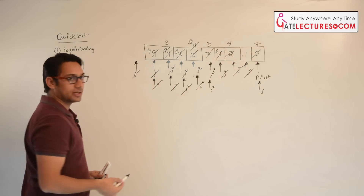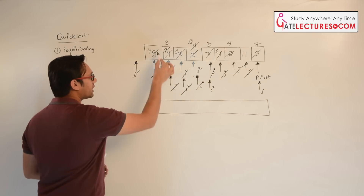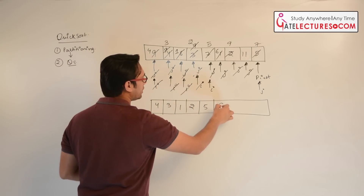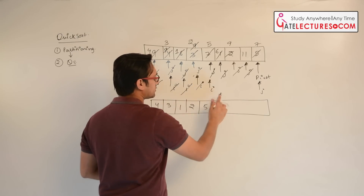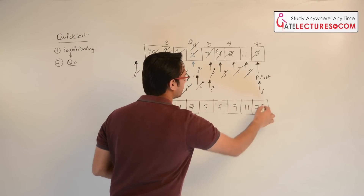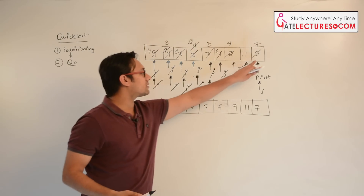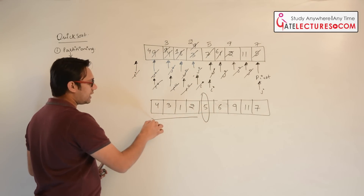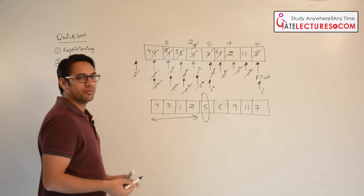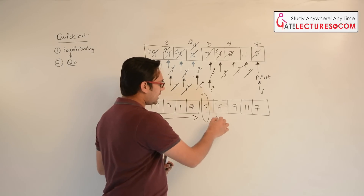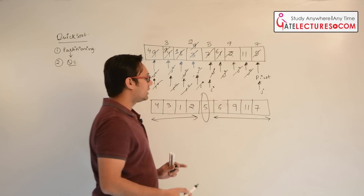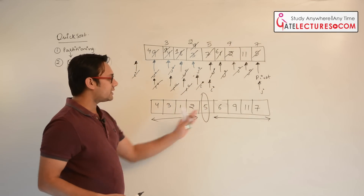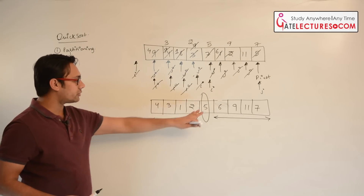After this procedure, the data elements we get are: 4, 3, 1, 2, 5, 6, 9, 11, and 7. As you can see, if you look at the position of 5, all the elements to the left of 5 are less than or equal to 5, and all the elements to the right of 5 are greater than or equal to 5. That means 5 is at its correct position. So we return this index location — this is called partitioning.